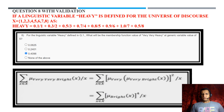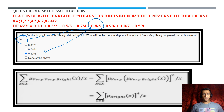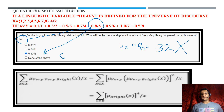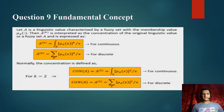Question 8: 'very very heavy' at generic variable 5. Element 5 has membership value 0.8. We must multiply 0.8 four times: 0.8 × 0.8 × 0.8 × 0.8 = 0.4096, so option C is correct. Note: do not multiply 4 × 0.8 = 0.32 — that is wrong. We must multiply 0.8 by itself four times, as clearly specified.